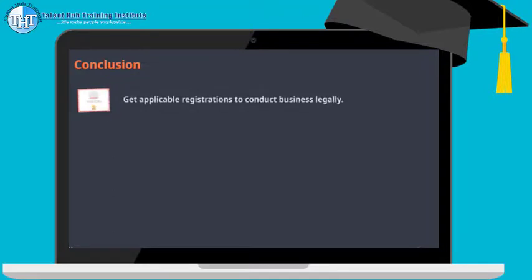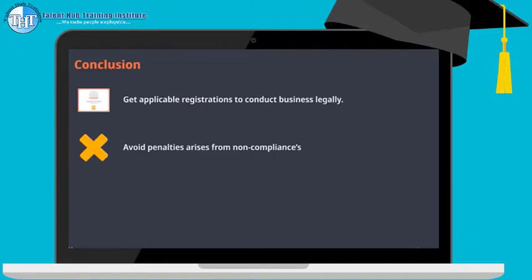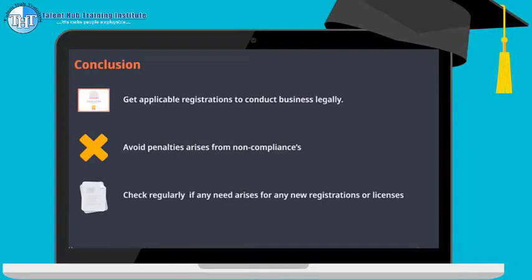Conclusion: once the business is incorporated, one must get all applicable registrations and licenses to carry out the business legally. Otherwise, the government may charge a penalty for non-compliance with rules and regulations. It is important to check regularly whether the business entity starts falling under any specified criteria by the government, creating a need for licenses that were not applicable earlier — to avoid consequences. Thank you, that is it for Chapter 3.